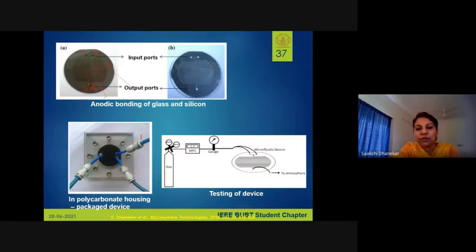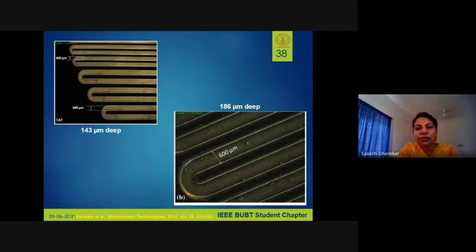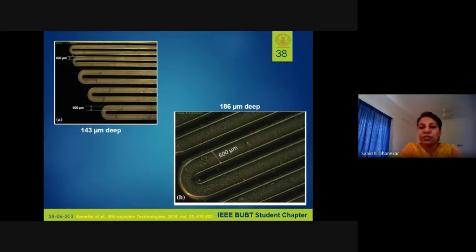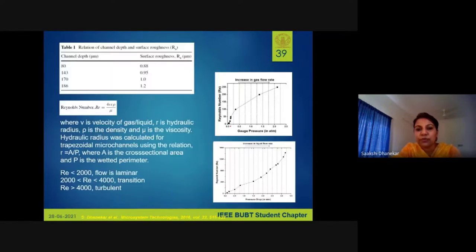Microscope pictures show channels that are 400 microns wide and 600 microns wide; the shadows show the silicon walls. The channel depths are 143 microns and 186 microns. A two-inch silicon wafer is approximately 280 microns thick. There is also a formula to calculate whether the flow is laminar or turbulent.